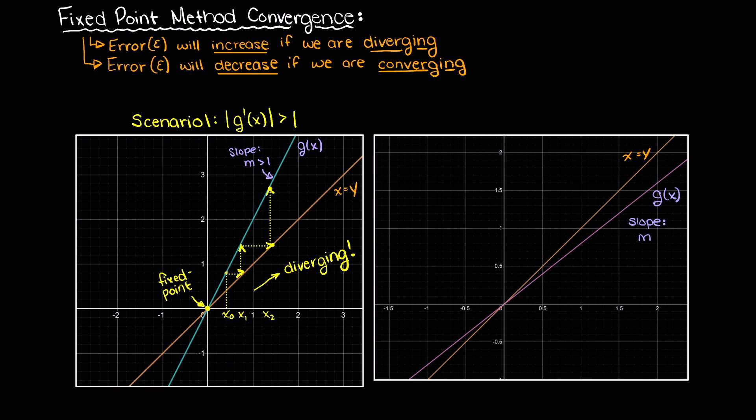Now, let's look at scenario 2, where the slope of g(x) is always less than 1. Choosing any starting guess, it becomes clear that we will always be converging to our fixed point.